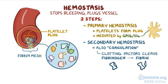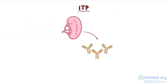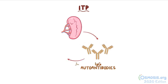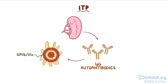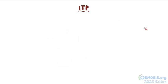Fibrin then forms a protein mesh, kind of like a giant net, that covers the platelet plug and stabilizes it. In ITP, the spleen produces certain IgG autoantibodies which bind to the platelet receptor GP2b3a and target the platelet-antibody complexes for destruction in the spleen. This leads to lowering of platelet counts in the blood, which makes it harder for bleeding to stop.